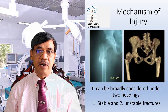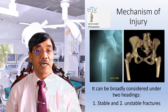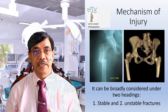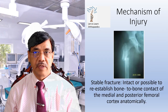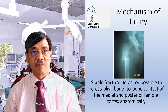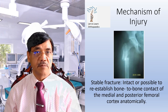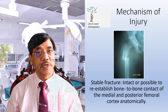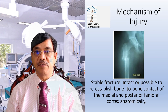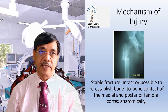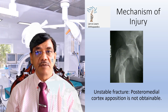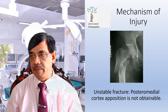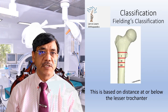These fractures can be broadly considered under two headings: stable fractures and unstable fractures. A stable fracture is one where it is intact or possible to re-establish bone-to-bone contact of the medial and posterior femoral cortex anatomically. Unstable fractures are those where posterior medial cortex apposition is not obtainable.